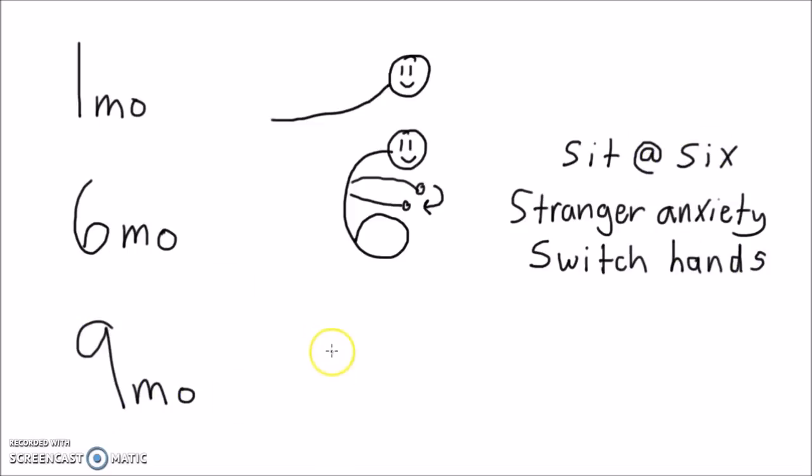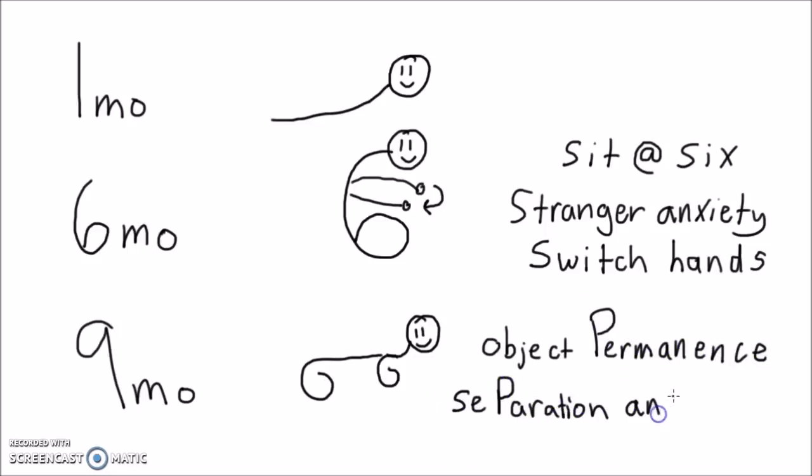At nine months the infant should be able to crawl. Crawling kind of looks like a nine fell down and a nine also looks like the letter P in the mirror so I'll use that to remember that nine month old infants developed object permanence and separation anxiety.